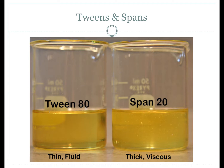Unlike acacia, non-ionic surfactants are not viscosity-inducing agents. Tweens with a high HLB value tend to be thin, fluid, and watery, while spans with a lower HLB value tend to be much more thick and viscous. When using these emulsifiers, it may be necessary to add a viscosity-inducing agent to help retard the rate of creaming, depending on the final HLB and the phase ratio. An emulsion with a high concentration of internal phase will be more viscous than one with a small amount of dispersed internal phase.